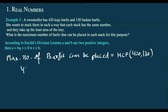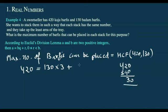420 equals 130 times 3 plus 30. 420 minus 390 gives remainder 30.